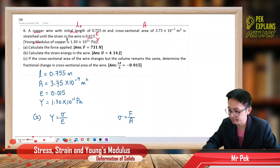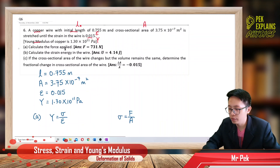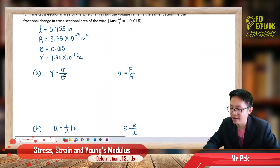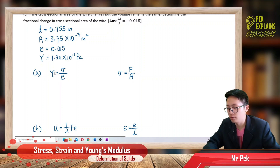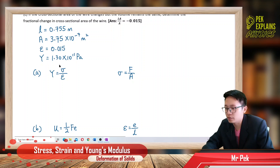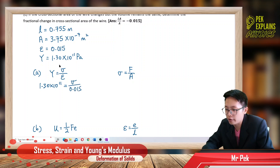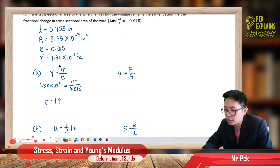So how to find the force applied? First, we find the stress. We can find the stress from the Young's modulus formula because we have the strain. Young's modulus is 1.3×10¹¹, so substituting: 1.3×10¹¹ equals stress over strain, and strain is 0.015. My stress is 1.95×10⁹.